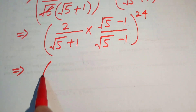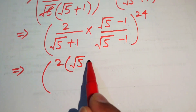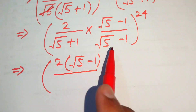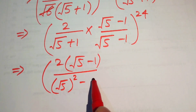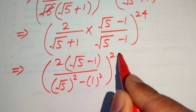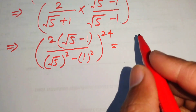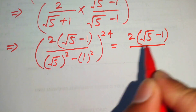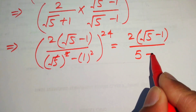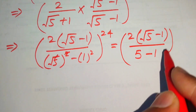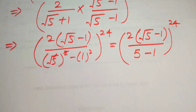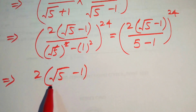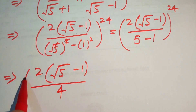In the numerator we have 2 multiplied by (square root of 5 minus 1). In the denominator we use the algebraic identity (a + b)(a − b) = a² − b², giving square root of 5 squared minus 1 squared, which simplifies to 5 minus 1 equals 4. So we obtain 2(√5 − 1) divided by 4, raised to the power of 24.